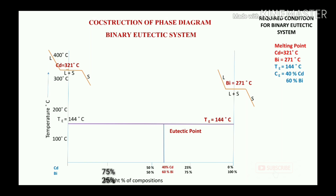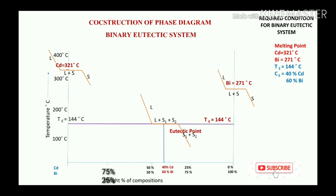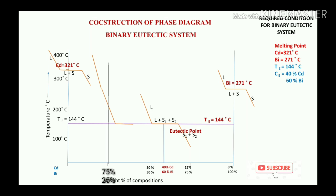Now taking the eutectic condition: the eutectic temperature is 144°C and the composition is 40% cadmium. This gives the eutectic point. Draw the cooling curve for the binary eutectic composition — liquid converts into two different solids at constant temperature: initially liquid, then liquid plus solid one plus solid two, converting into solid one plus solid two.